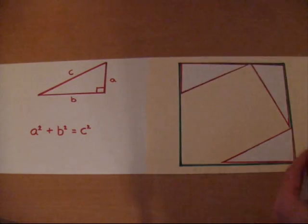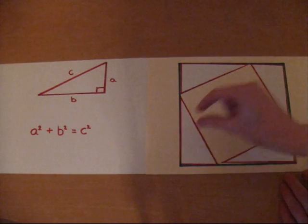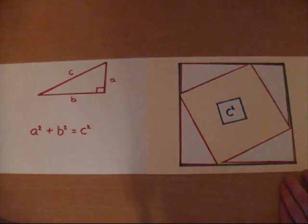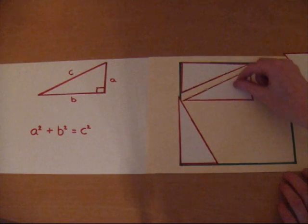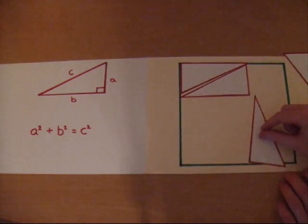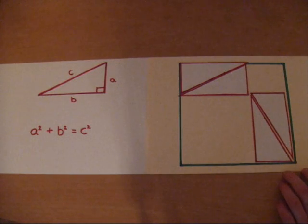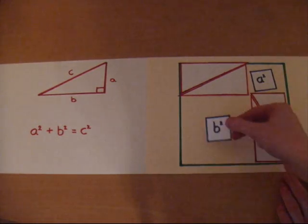And so, this shaded square in the center will have an area of c squared. Now, I'm going to rearrange the triangles like this, and I will create two more shaded squares, which will have areas of a squared up here and b squared here.